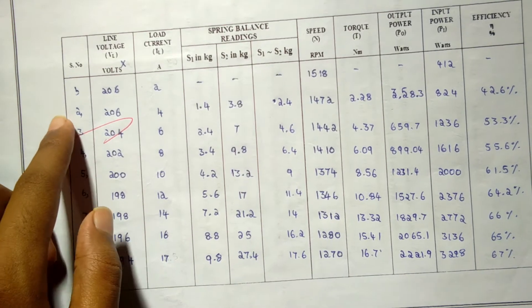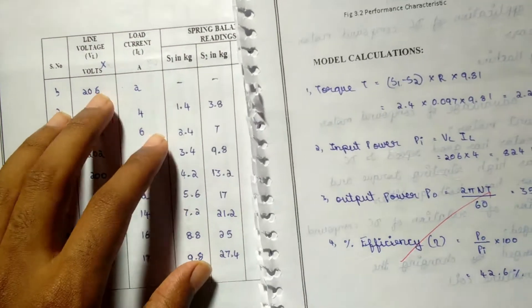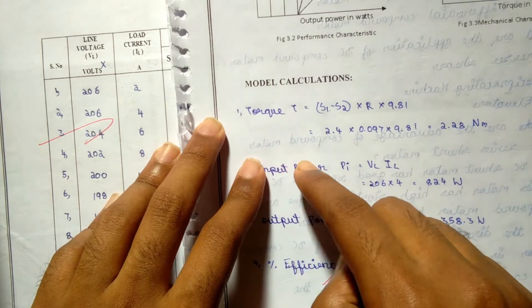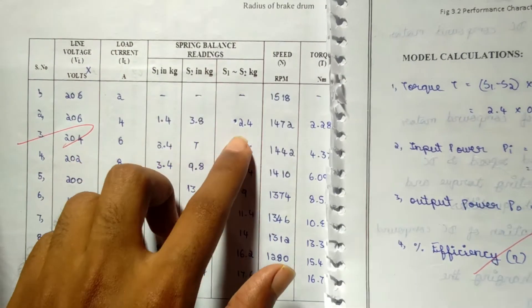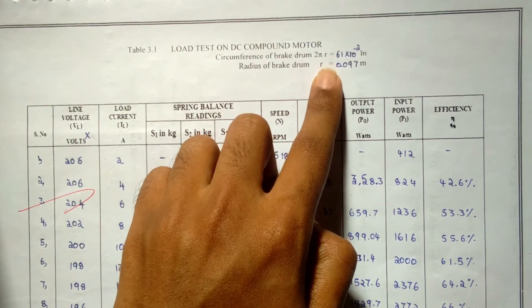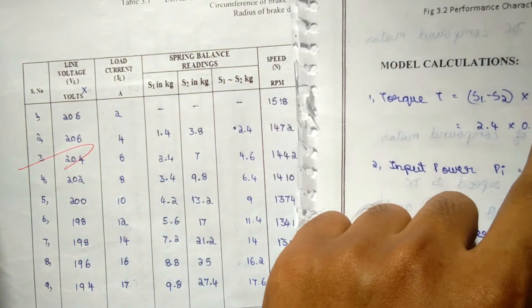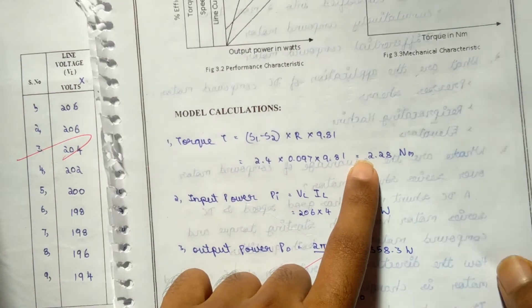I will show the model calculation for this second value. The torque is found using this formula. Here S1 difference S2 is 2.4 and R is the radius of the brake drum and 9.81, so the value will be 2.28 newton meter.